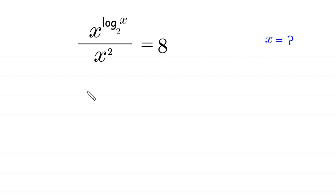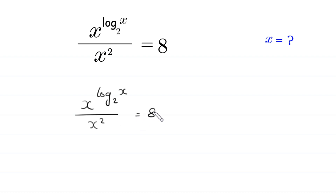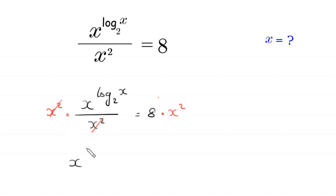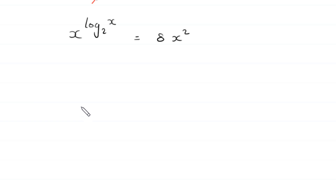We have the given equation: x to the power log base 2 of x, divided by x squared, is equal to 8. We multiply both sides of this equation by x squared, so the x squared cancels out, and this equation becomes x to the power log base 2 of x is equal to 8x squared.